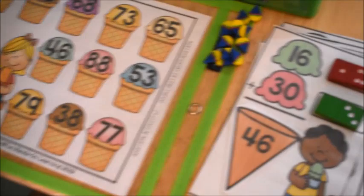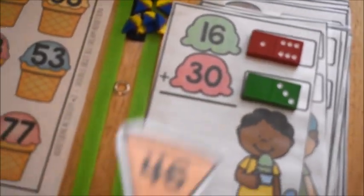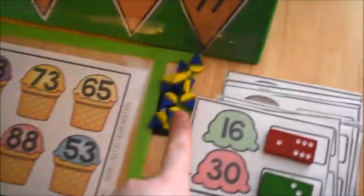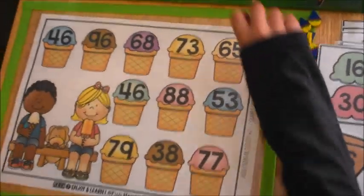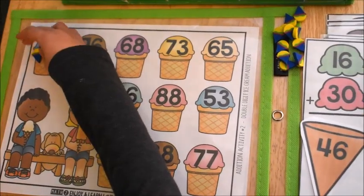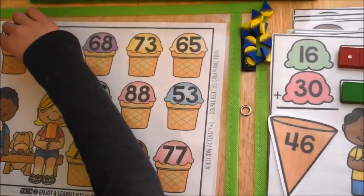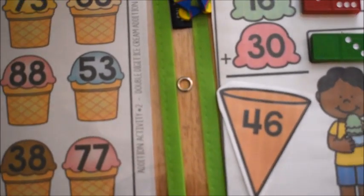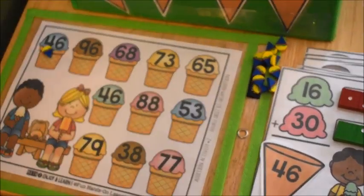All right, the last step. You found 46, and now the last step is to cover up 46 on your mat. Use your little ice cream cone erasers. Cover up 46 as your answer. Look, there's two 46s, so that means 46 is going to be another answer.